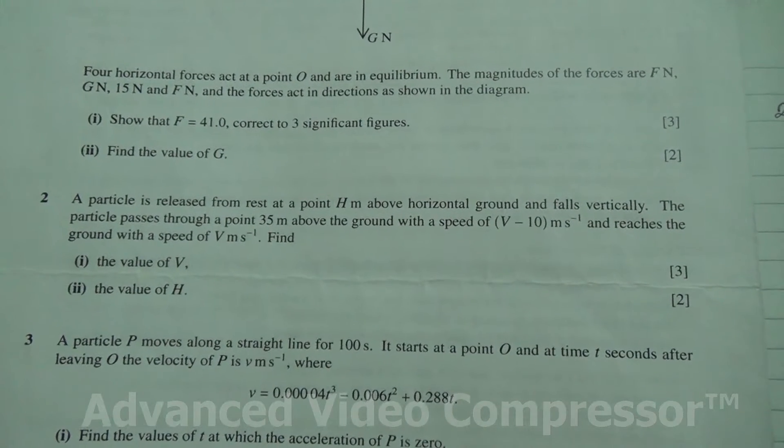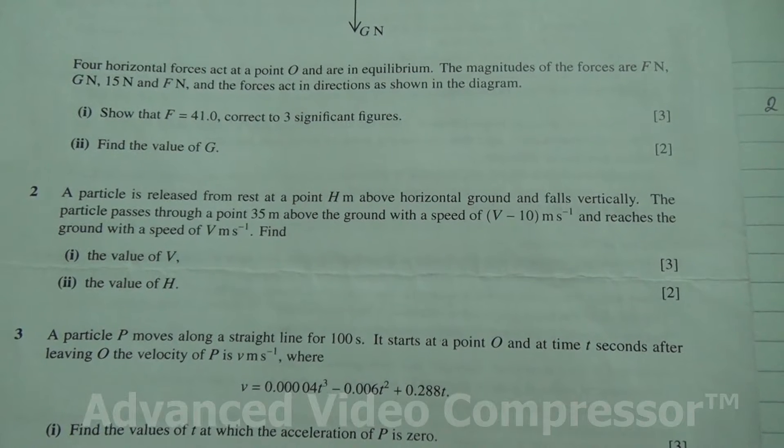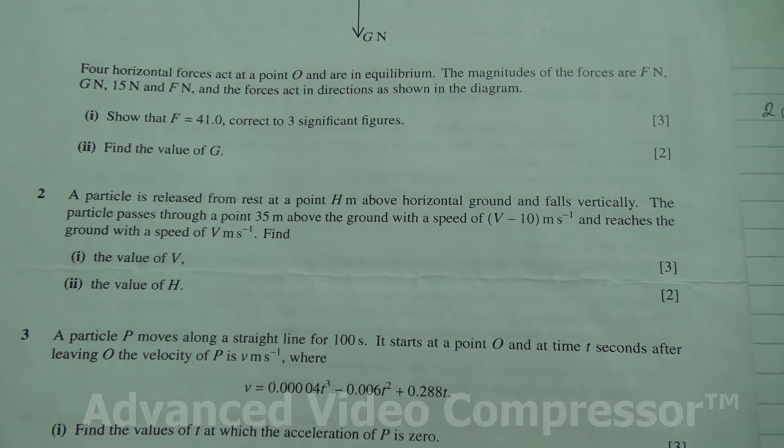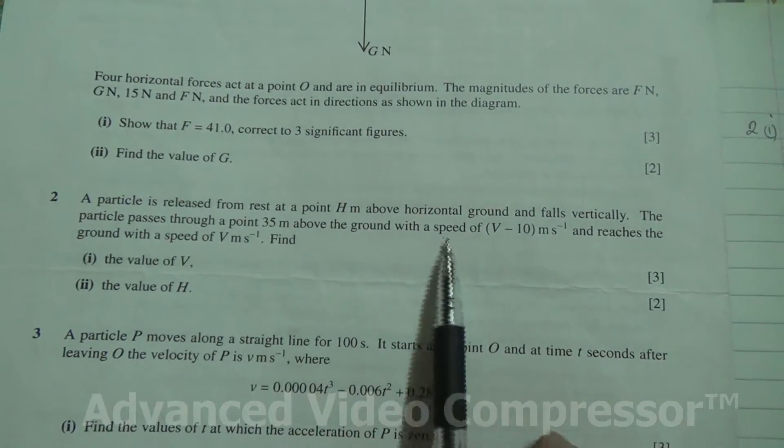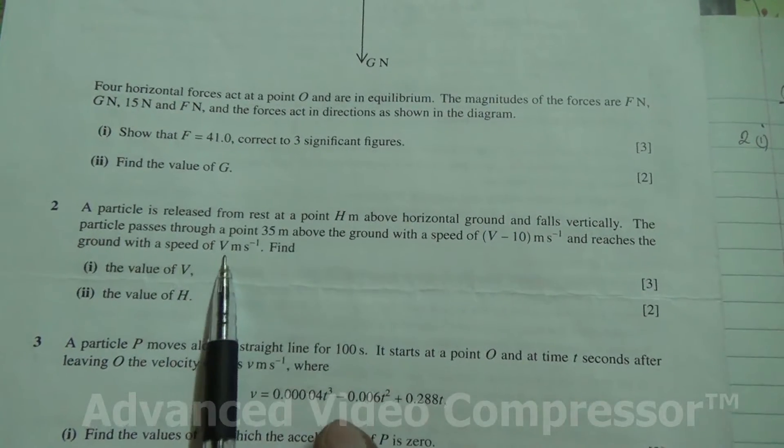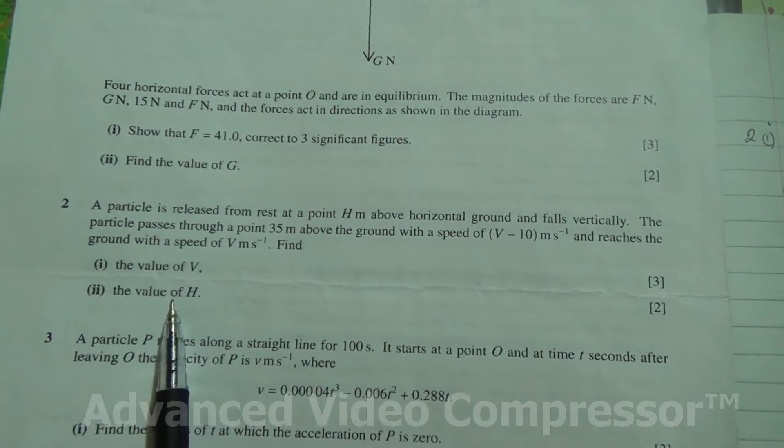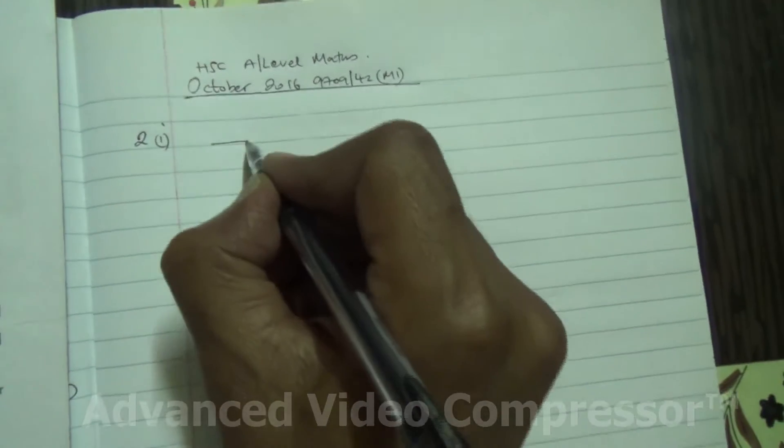Alright, question number 2. A particle is released from rest at a point h meters above horizontal ground and falls vertically. The particle passes through a point 35 meters above the ground with a speed of v minus 10 meters per second and reaches the ground with a speed of v meters per second. Find the value of v and also the value of h. Alright, so let us draw an illustration.